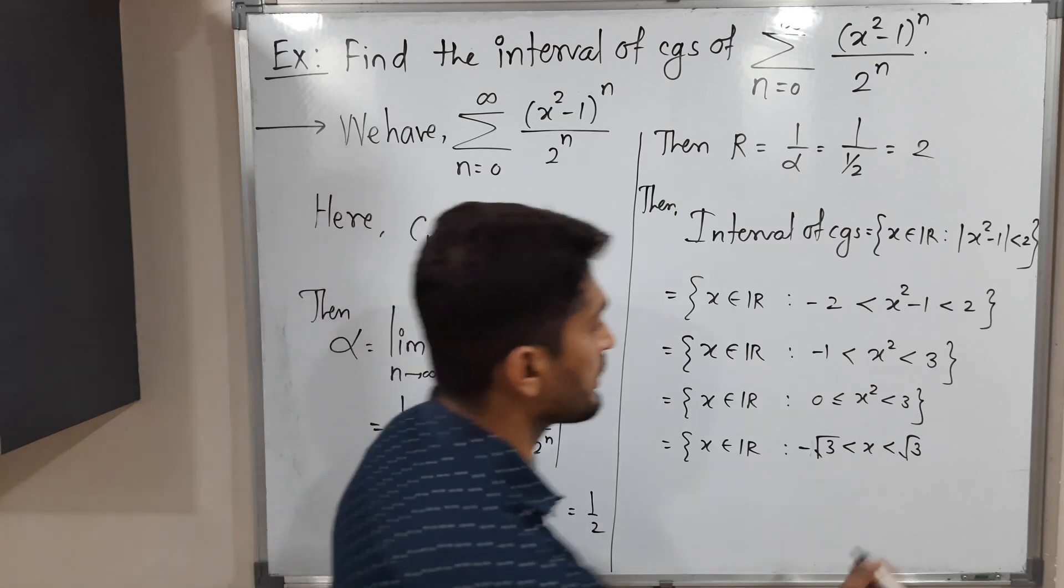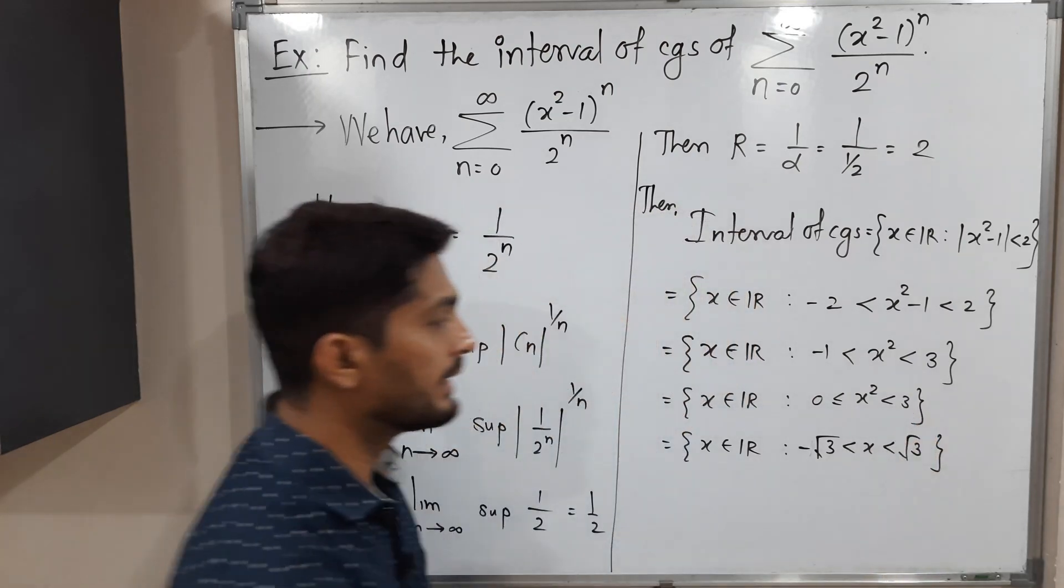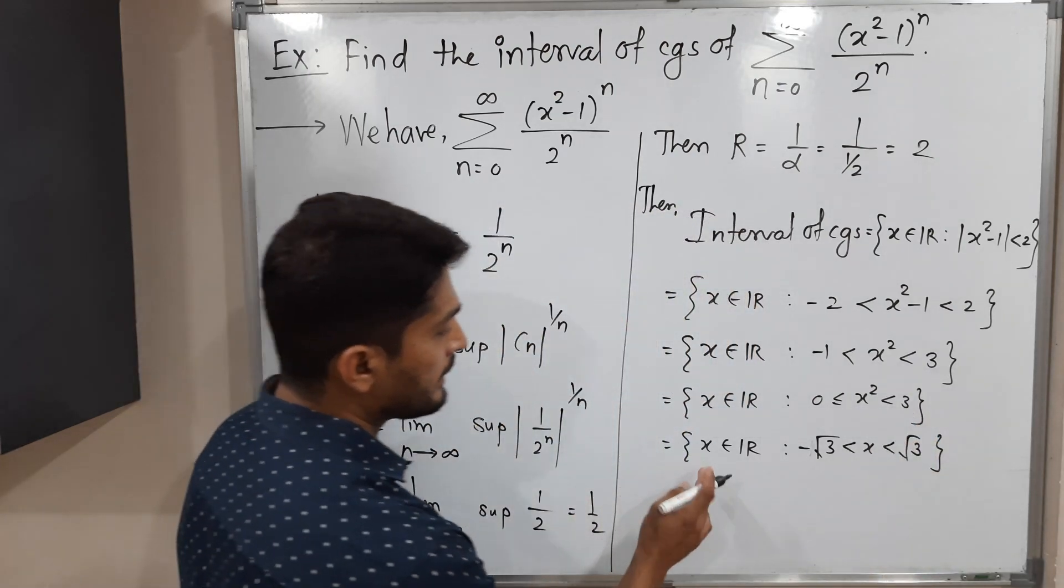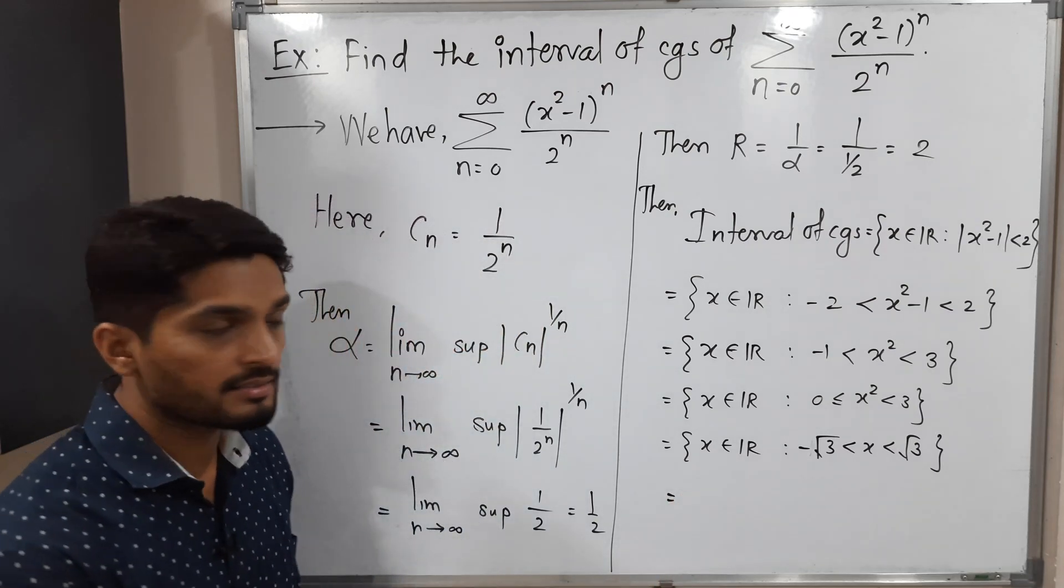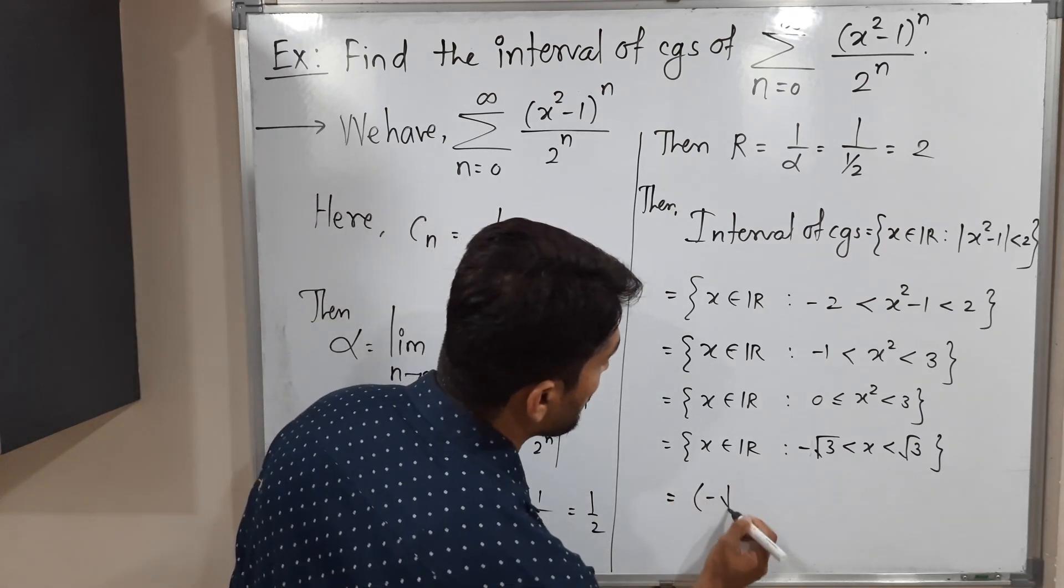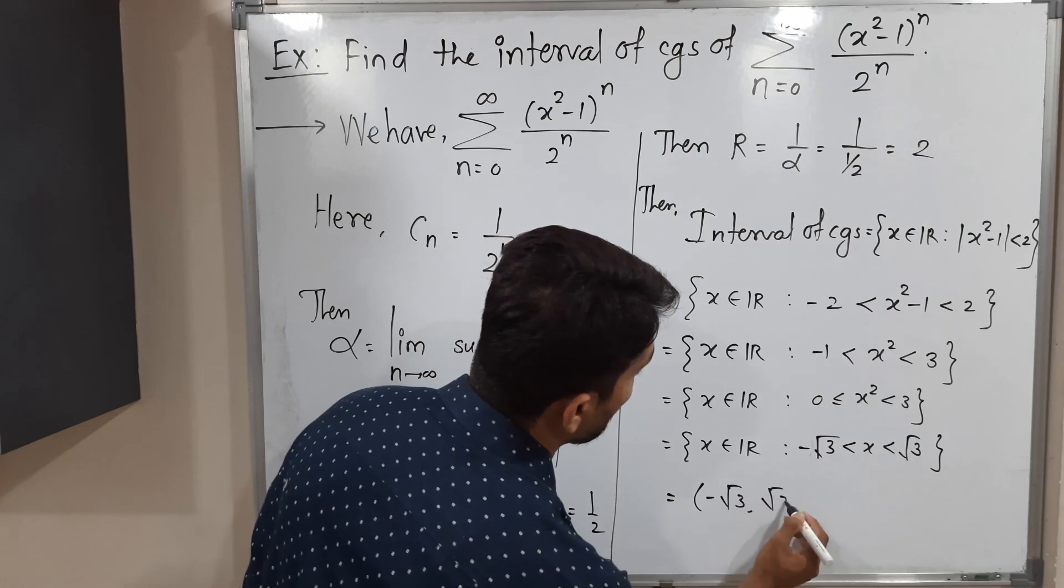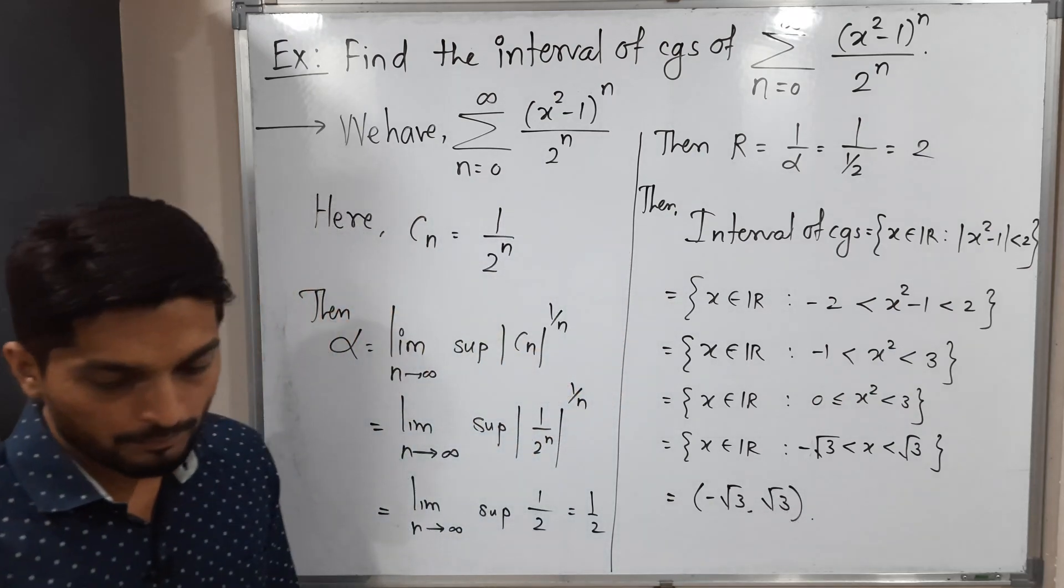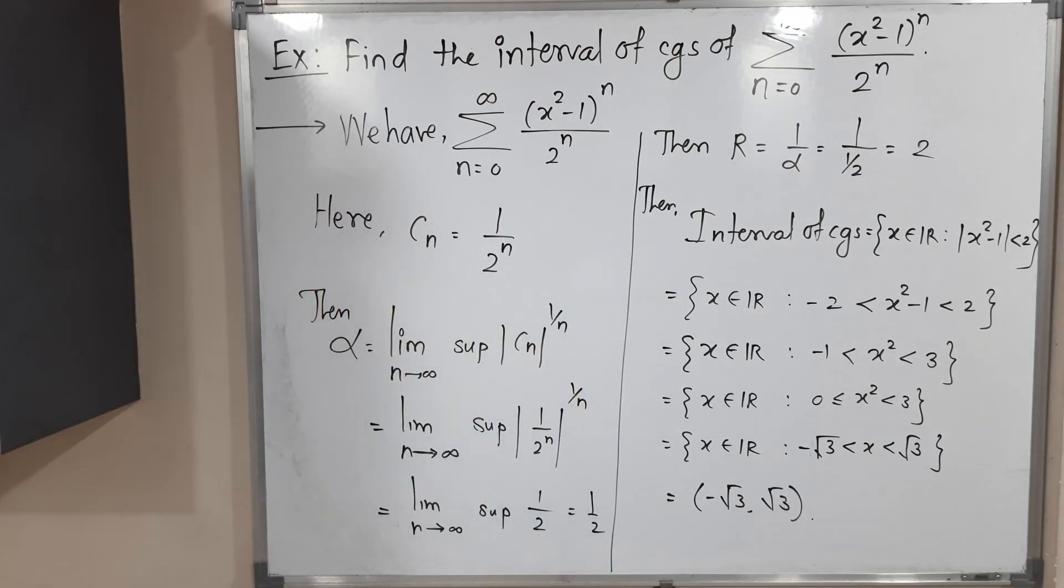It contains all real numbers which lie between -√3 and √3, so this is our interval of convergence: (-√3, √3). So in this way we have completed this example. Make a screenshot of it, and we will stop. Thank you, see you.